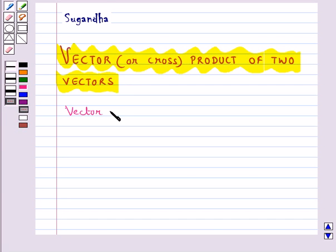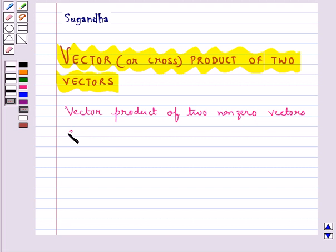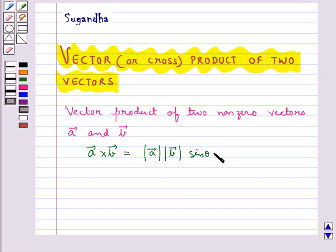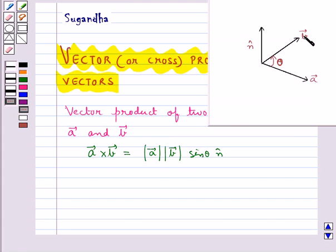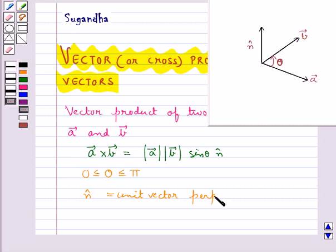Vector product of two non-zero vectors A and B is given by vector A cross vector B equal to magnitude of vector A into magnitude of vector B sin theta n-cap. Where theta is the angle between vector A and vector B, and theta should be greater than or equal to 0 and less than or equal to pi. Also, n-cap is the unit vector perpendicular to both vector A and vector B.